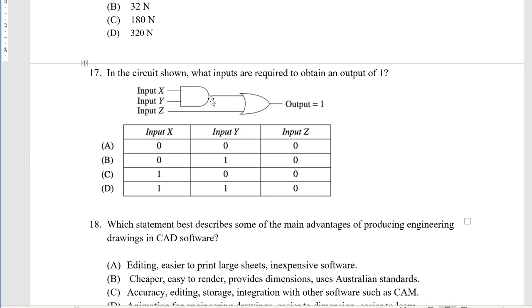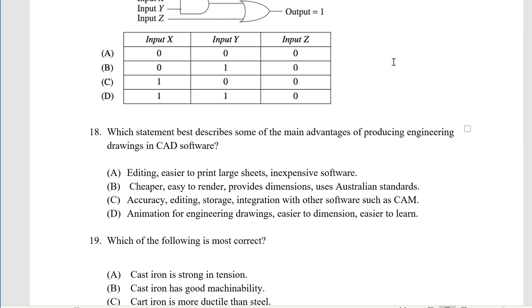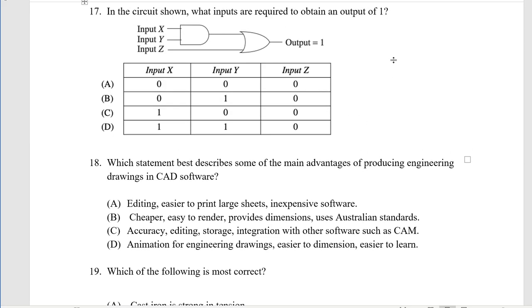The circuit shows what inputs are required to obtain an output of 1. For this to be 1 both of the AND gates need to be 1, so X and Y both need to be 1. X and Y, D is the only option.